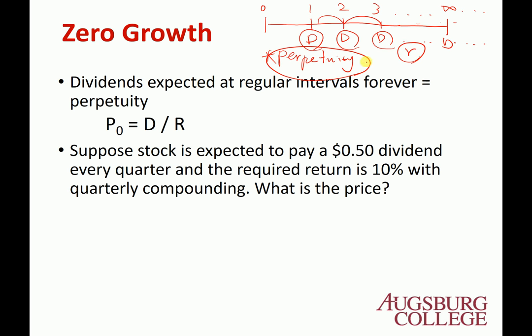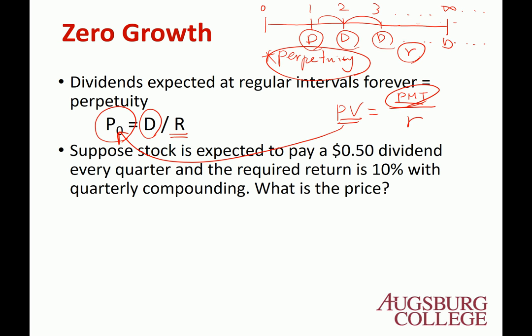For this case, the payment is the dividend, so the price of the stock equals the dividend divided by the required rate of returns. This is usually the case for preferred stock. There are two different types of stock: preferred shares and common shares. Common stock gives you ownership — you participate in the annual meeting and vote, electing the board of directors. Preferred shareholders, however, do not have voting rights.